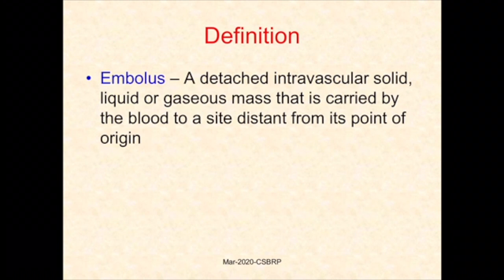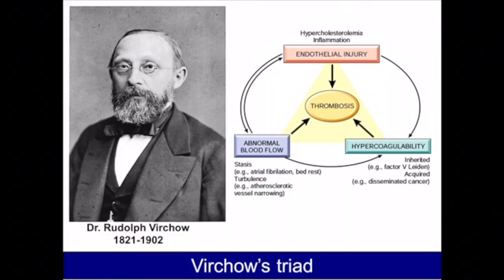An embolus is a detached intravascular solid, liquid, or gaseous mass carried by the blood to a site distant from its point of origin. Virchow enumerated three components which, when altered, may result in thrombosis formation. These three components, known as Virchow's triad, include endothelial injury, abnormal blood flow, and hypercoagulable state.